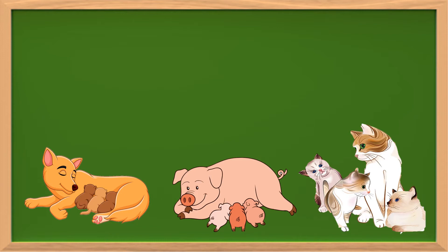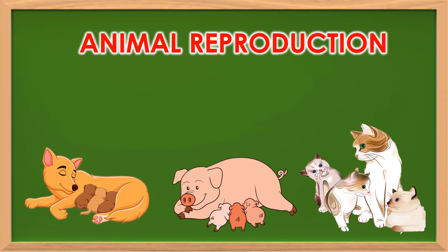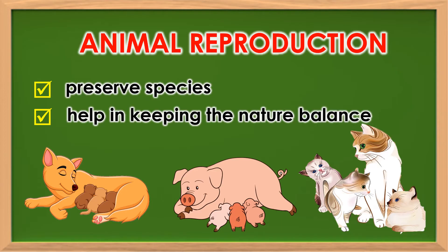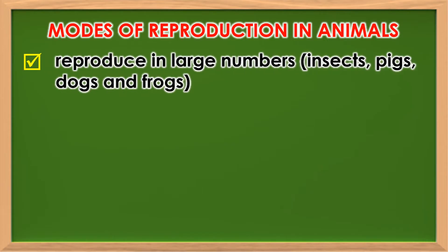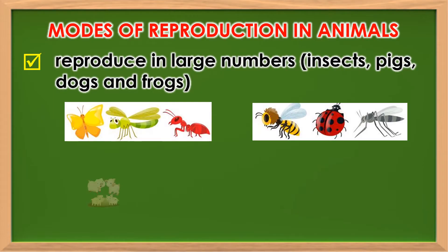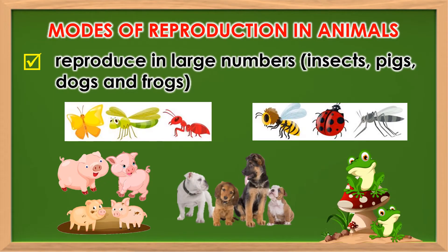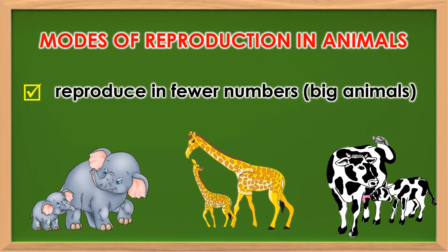Animals have the means to increase their number through reproduction. This is to preserve their species and to help in keeping nature balanced as they interact with other animals. Different animals have unique modes of reproduction. It can be noticed that some animals can reproduce in large numbers like insects, pigs, dogs, and frogs, while on the other hand, big animals generally reproduce in fewer numbers.